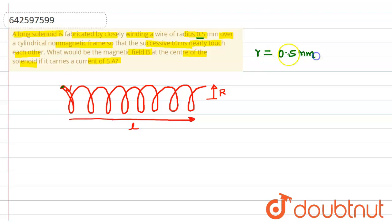The cross-section diameter of the wire will be 2r, which equals 1 mm, and this can be given as 10 to the power minus 3 meters. We have given that this is a long solenoid, that means the length is much greater than the radius.